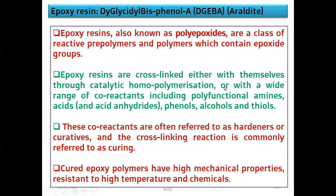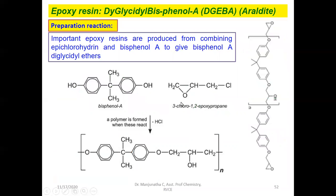These cured epoxy resins have very good mechanical properties and are very resistant to high temperature and also resistant to chemicals. Epoxy resin, or DGEBA — also called araldite — is prepared using two different monomers: one is bisphenol A, and another is epichlorohydrin.